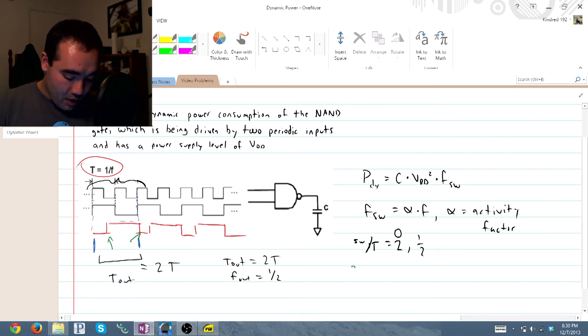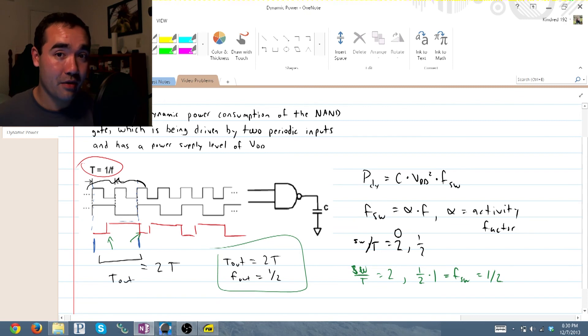So, we know that our switches, that's SW per period equals two and when it equals zero or two then our activity factor is equal to one half. Now, that's one period so our frequency is also one because frequency is one over period times one equals an FSW of one half identical to what we find using the input period as our reference point.